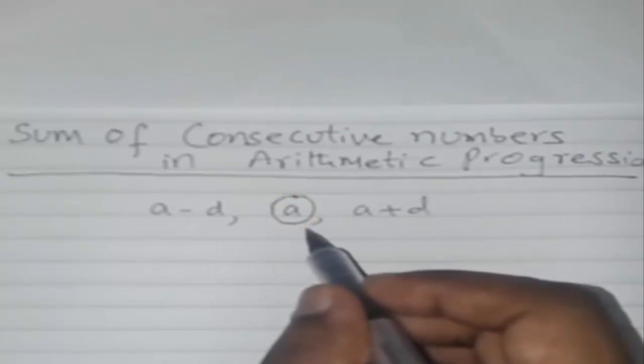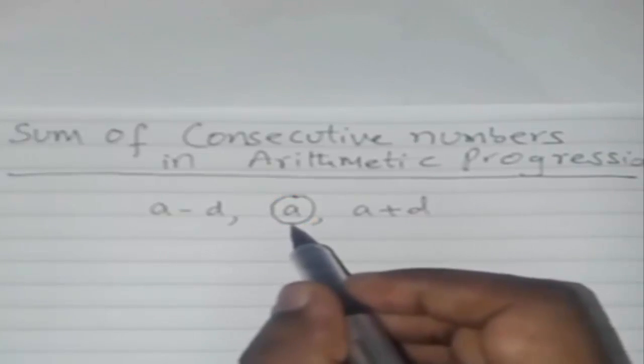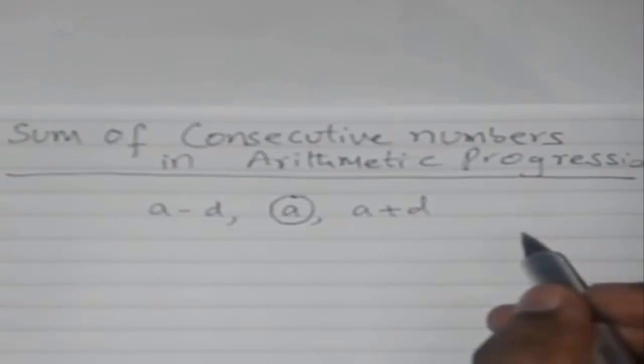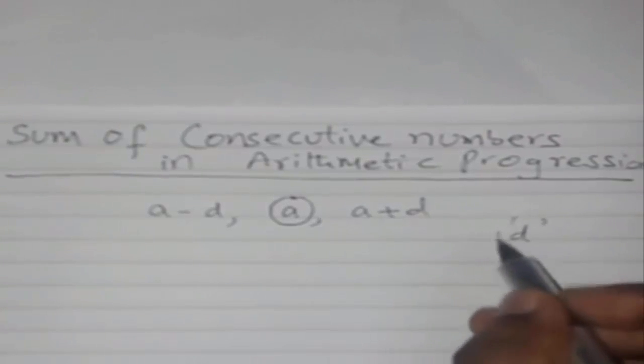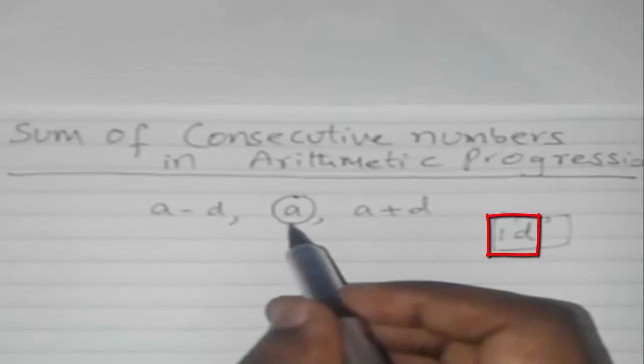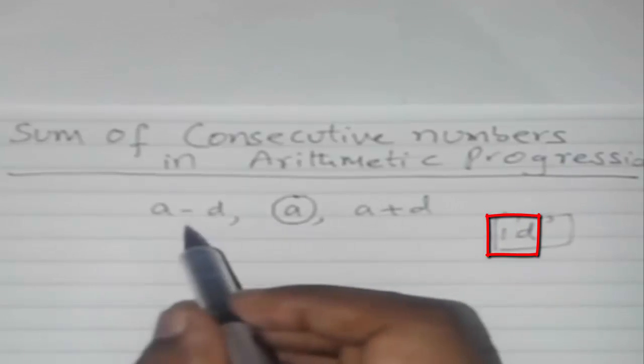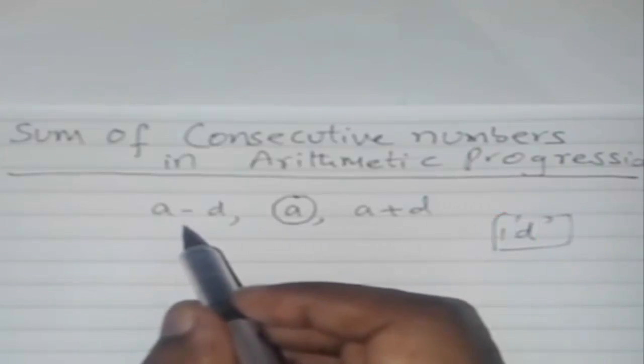So that our difference should be 1d. That's why in center it is 'a', and I have taken the preceding number as a minus d, and followed by a plus d.